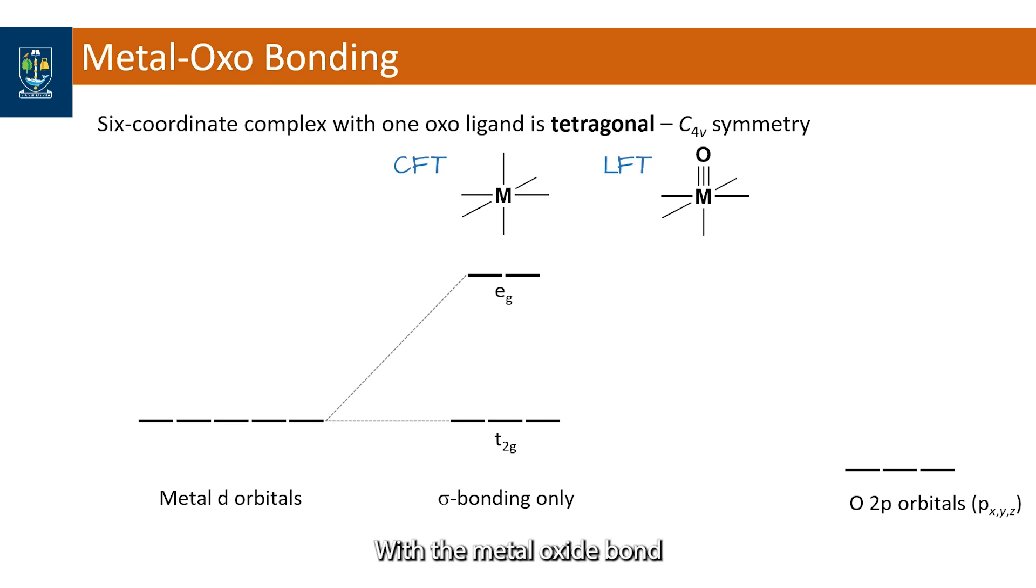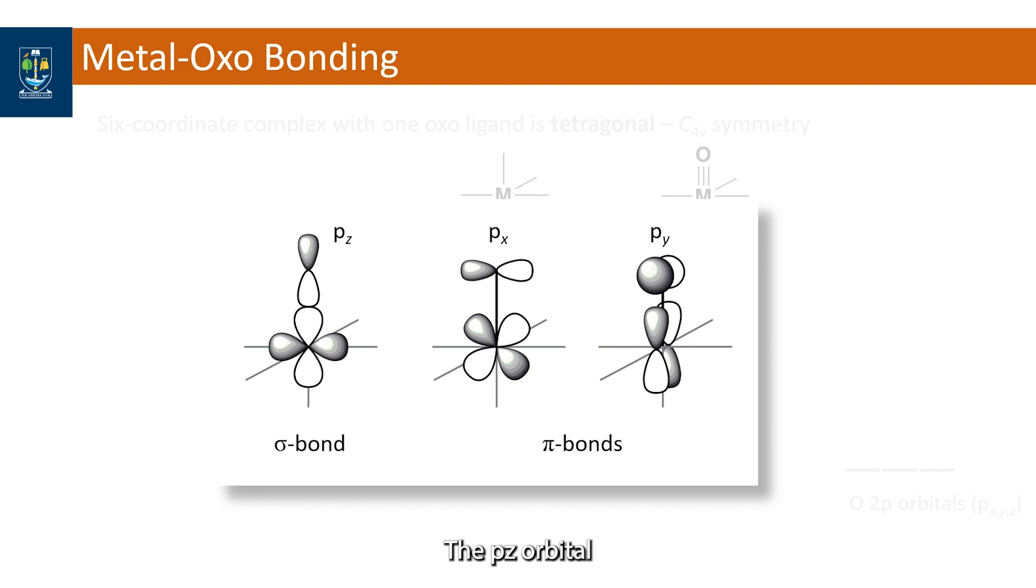With the metal oxide bond defined along the z-axis, the pz orbital makes the mandatory sigma bond and the px and py orbitals overlap with the corresponding d orbitals to generate pi bonds.